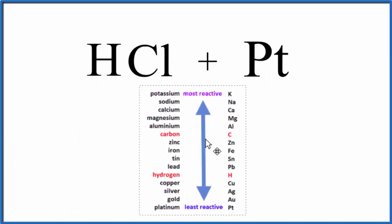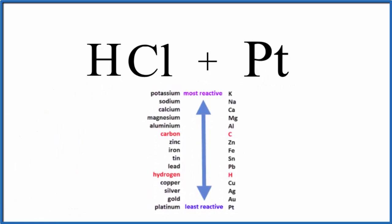We can use the activity series of the metals here to figure out whether this reaction will happen or not. So as we go down, we're looking for hydrogen or platinum. So we go down here, here's hydrogen, and as we go down way to the bottom, platinum.